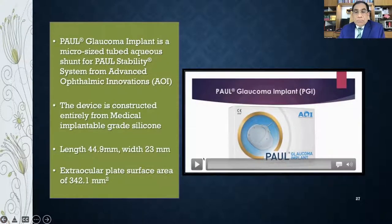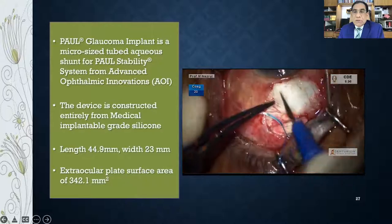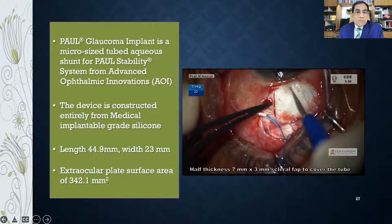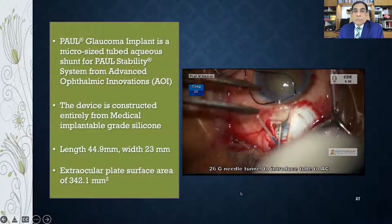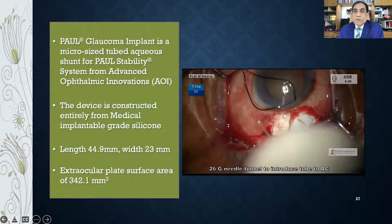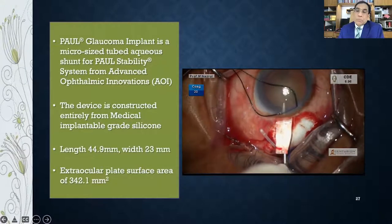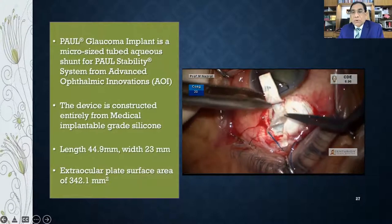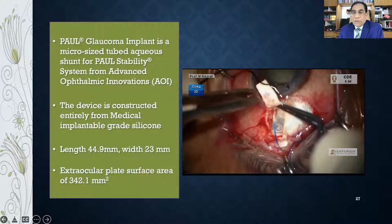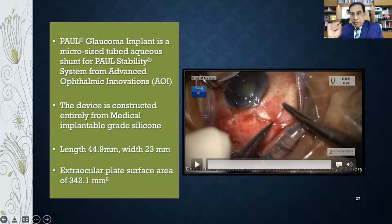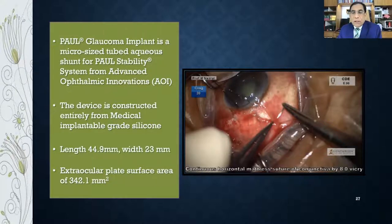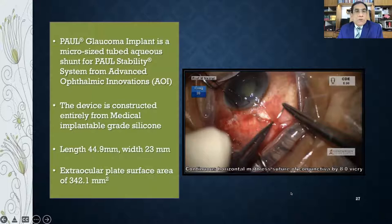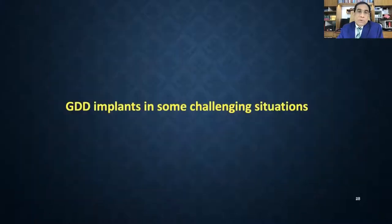The Paul Glaucoma Implant (PGI) is a very good device with a large surface area of approximately 342 mm², made by Advanced Ophthalmic Innovations in Singapore. Its key advantage is a very narrow 30-gauge tube, requiring only a 27 or 28 gauge needle track. The narrow tube requires very little space in the anterior chamber — even angle-closure glaucoma patients can receive it. My patients are doing very well, though unfortunately it is not yet available in Bangladesh.